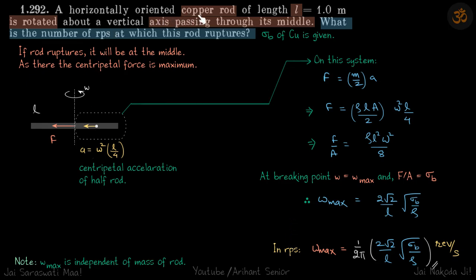A horizontally oriented copper rod of length L is rotated about the axis passing through its middle. What is the number of RPS at which this rod ruptures?